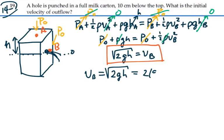So this is going to be 2 times 9.8 times 0.1 meters. We have the square root of that, which equals 1.4 meters per second. So the speed of the milk coming out of the hole is 1.4 meters per second at point B.